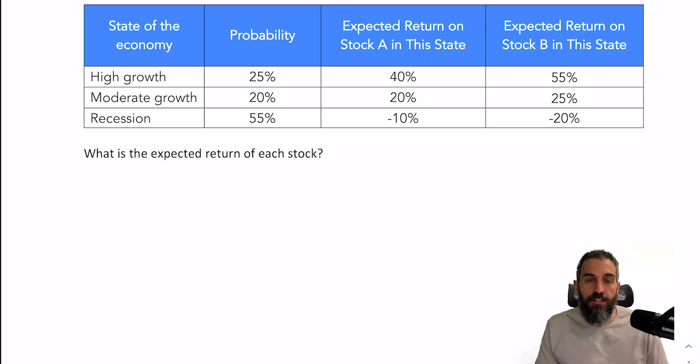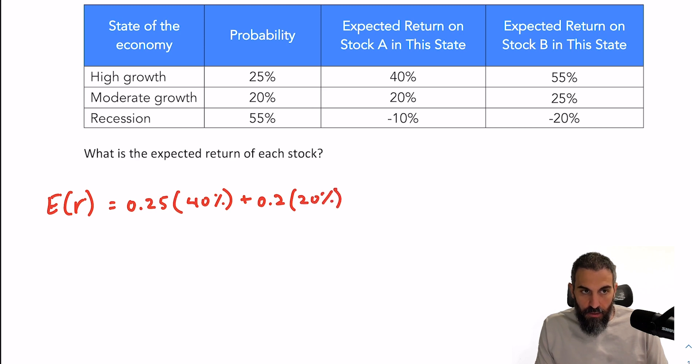The first question you're asked is find the expected return for each stock. So to do that for stock A, we're going to take the probability and multiply it by the expected return in each individual state. So that would be a 25% probability of stock A returning 40%, 20% probability of stock A returning 20%, and a 55% probability of stock A losing 10%. And that works out to be an 8.5% expected return.